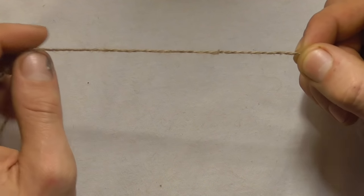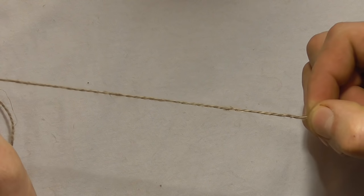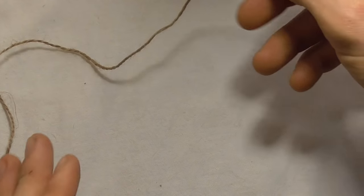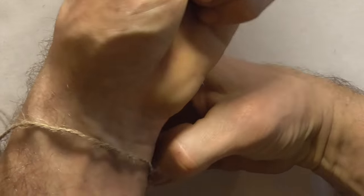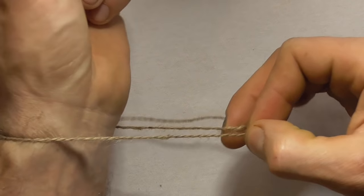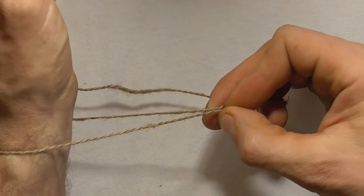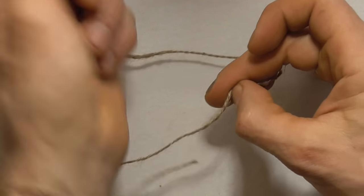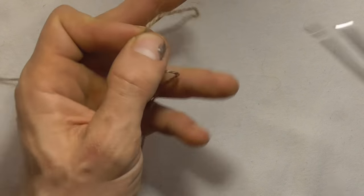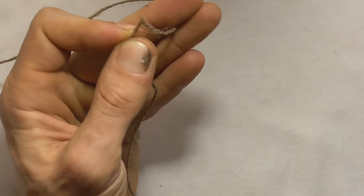Okay, to make this we're just going to need some garden twine. Hemp or jute is fine. We just want to measure it out around our wrist, just enough to go around, and then a little bit of extra for some knotting. Then we just want to cut that off.